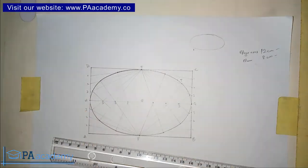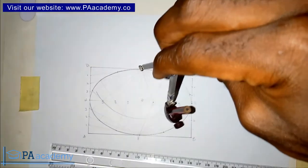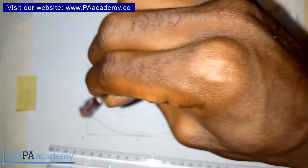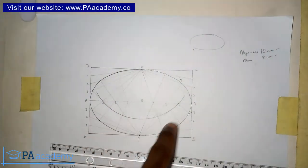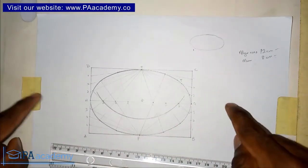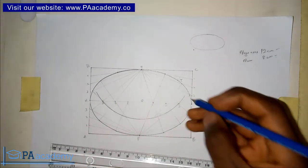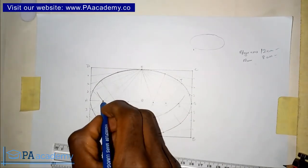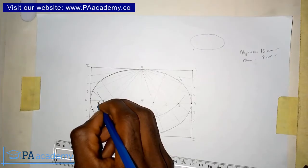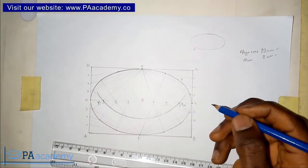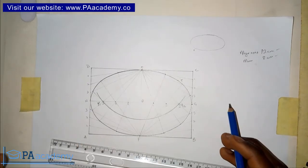I already have 6 centimeters set on the compass. I'll place it on point E and draw an arc. Note the points where the arc touches line HG — the major axis line. It touches here and here, and we'll call those points Y1 and Y2. These are also called the focal points.